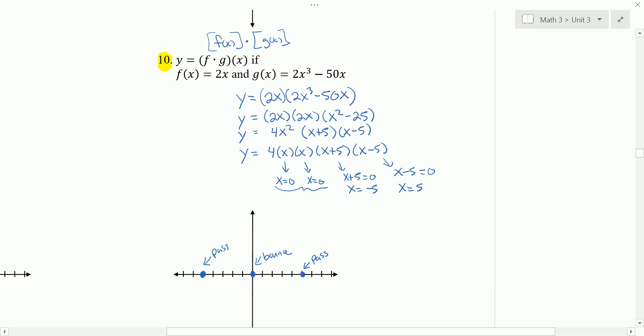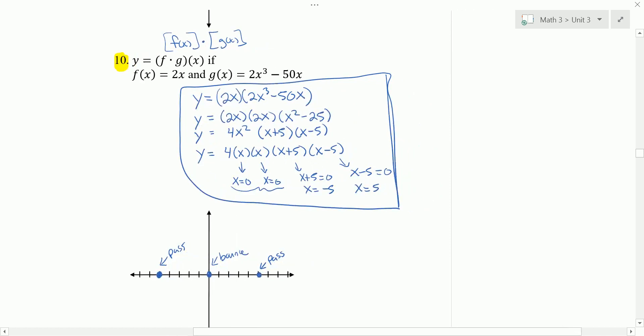Before I graph this, I want to locate my y-intercept. To find the y-intercept, you need to plug in 0 for x. So we get y equals 2. I'll use this equation right here. So 4 times 0 times 0 times 0 times x plus 5. So 0 plus 5 times 0 minus 5. So anything times 0 is 0. So we end up getting 0. So our y-intercept is 0, 0.